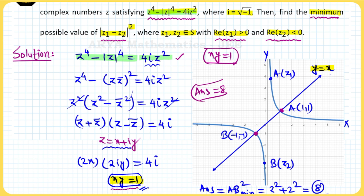This was not a difficult problem. In place of |z|², substitute z·z̄, then write z = x + iy. The locus we obtain is xy = 1. For z1 with positive real part, it lies on the first quadrant branch; for z2 with negative real part, it lies on the third quadrant branch. The minimum value of AB² is along y = x, giving the correct answer of 8. Thanks for watching and keep learning.